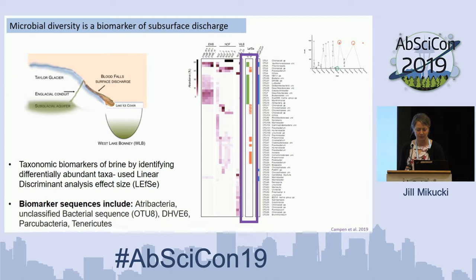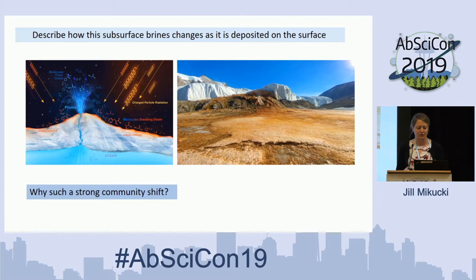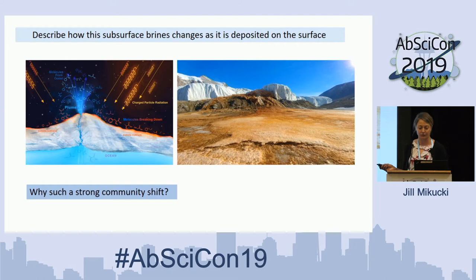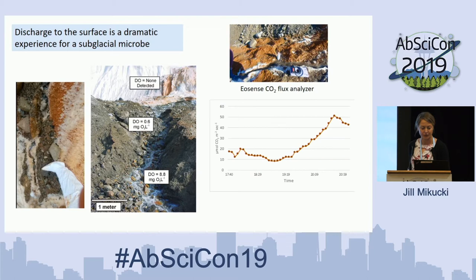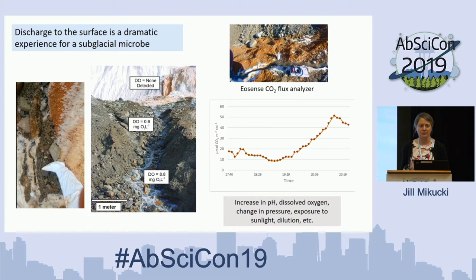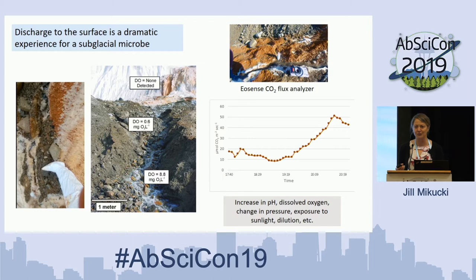Now the brine is out on the surface — how does this change? We see this strong community shift, which makes me think of ocean worlds and what you might get on the surface versus what it's actually sourced from. If we follow the discharge down the glacier and start sampling, I'd start with something with no detectable oxygen, then increasing levels of oxygen as you go down. This year we put a CO2 flux sensor out there and you can see there's also a lot of CO2 degassing from the system. This is a really traumatic event for a microorganism — increasing pH, exposure to sunlight after potentially being under a glacier for millions of years, oxygen stress, pressure changes, dilution — everything it became comfortable with in that incredibly stable, dark environment is now gone.